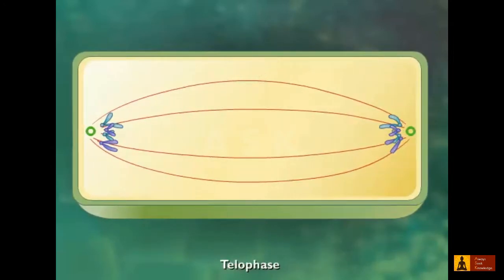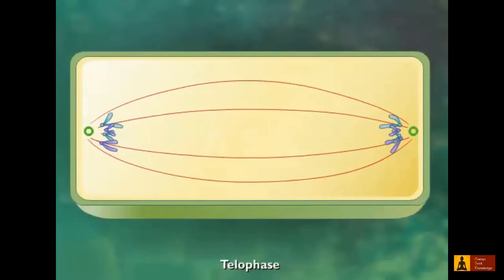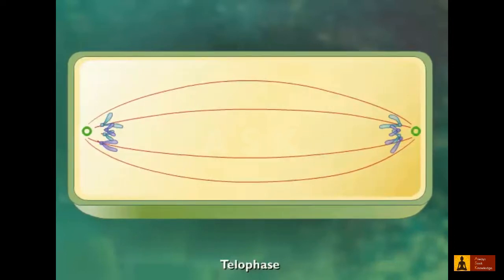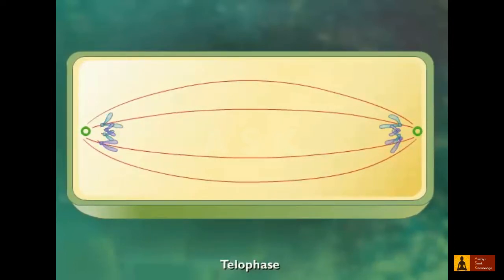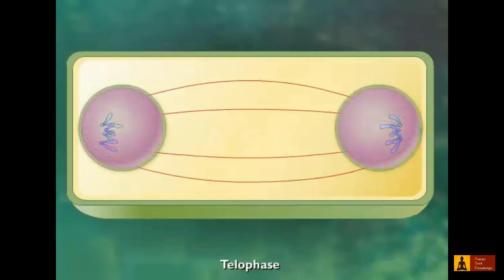During telophase, chromosomes reach the poles of the cell and begin to disappear. The polar microtubules continue to elongate, the nuclear membranes form, the nucleoli appear, and the chromosomes decondense.